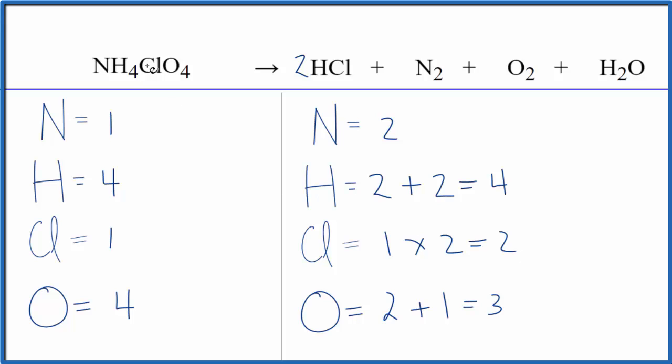Might as well just put a two in front of the ammonium perchlorate. One times two, that gives us two of the nitrogens. Four times two, eight hydrogens. One times two, so that does balance the chlorines even though the hydrogens aren't balanced now. And then four times two, that gives us eight.